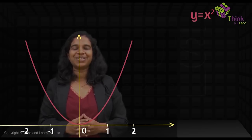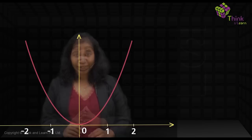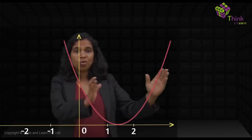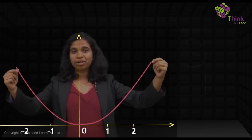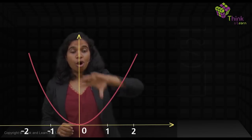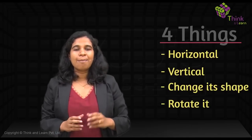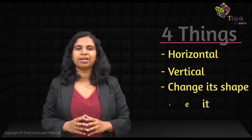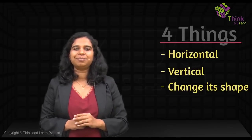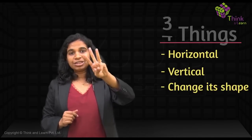This is the simplest quadratic equation — just x with a degree of 2. Now, imagine you could play with this curve: you could move it left or right, move it up or down, change its shape, or rotate it. When you rotate a parabola it becomes an oblique parabola, which we don't need to deal with here. So the three things we'll do are: change its shape, move it horizontally, and move it vertically.